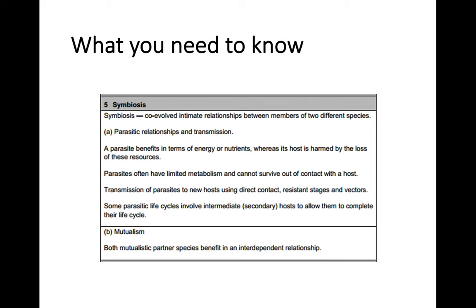That's it, folks. It's a fairly short key area. In symbiosis, just make sure you know there are two forms: parasitism and mutualism. In parasitism, the parasite benefits at the expense of the host. Make sure you also know the differences between forms of transmission — in direct life cycles you can have direct contact, resistant stages, or vectors. In indirect life cycles, that's when you use an intermediate host before passing on to the definitive host. In mutualism, two organisms both benefit from the relationship. That's all for Key Area 5 — I'll speak to you later with Key Area 6. Thanks so much for listening.